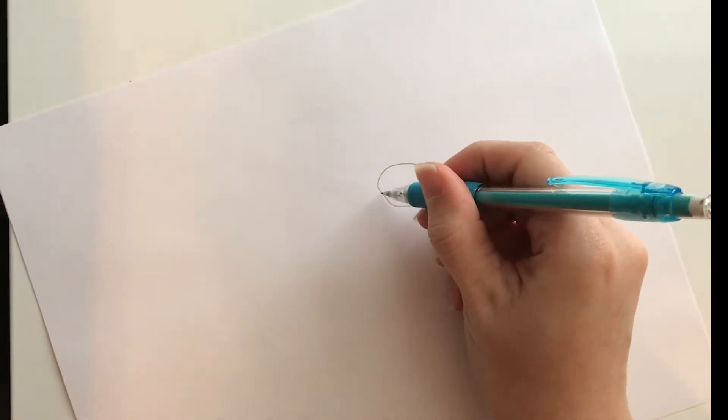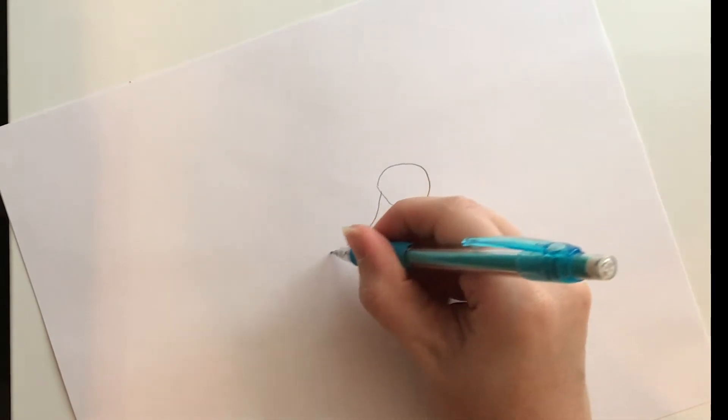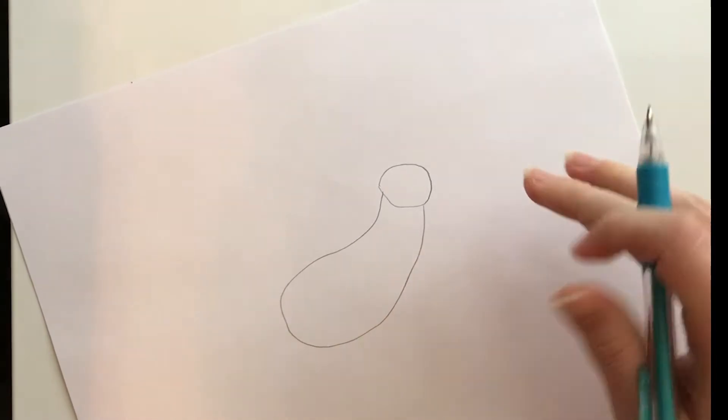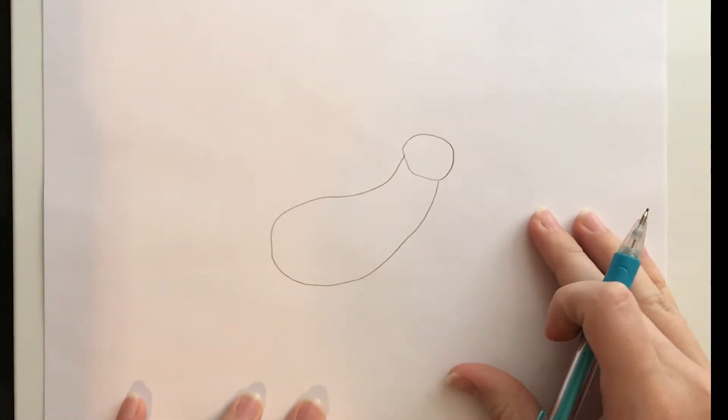You're going to start with a circle with kind of a point to the end of it. That's going to be our face and then kind of a potato shape. That's our sloth's head and body.